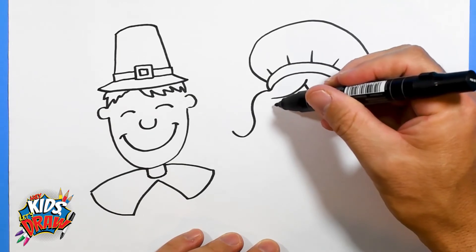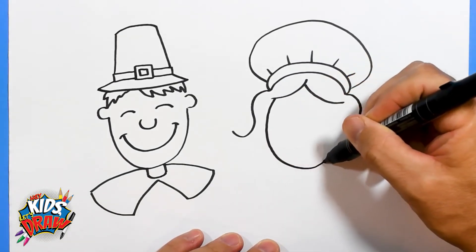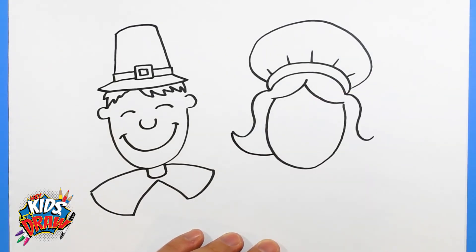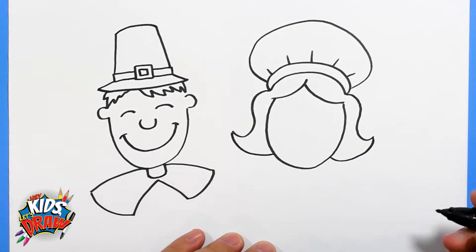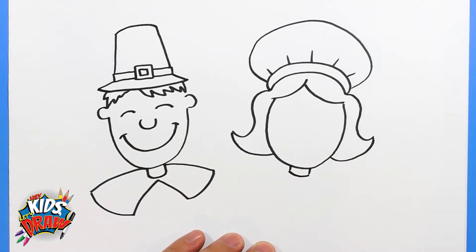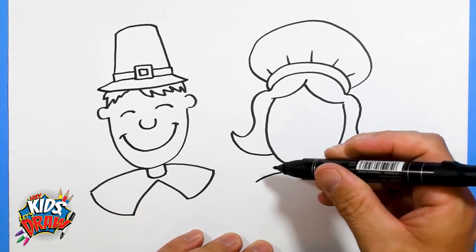One little face connects up to that hair, and this hair will come down and connect to the face. Down, connect to the face. We'll do a little neck and another collar similar to the boy.